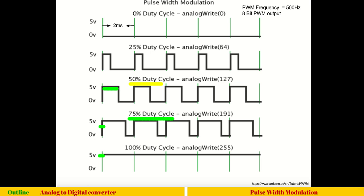That's all with pulse width modulation. I hope you've understood the concept. Both analog to digital conversion and pulse width modulation have many other techniques to implement and are more complex than what we've covered here, but this is the easiest way to understand them. For Arduino sessions, you only need to deal with this level of analog signals and not complex ones. See you in the next video.